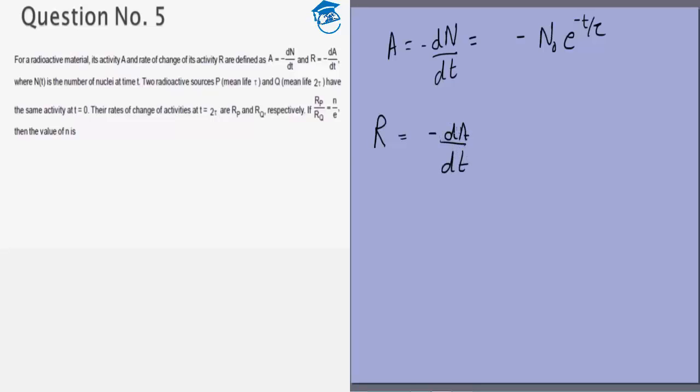We are given two radioactive sources P and Q which have the same activity at t equals 0, and the rates of change of activities are Rp and Rq. We want to find the ratio of them.